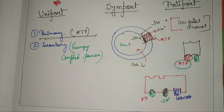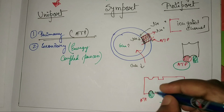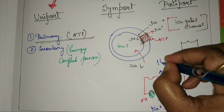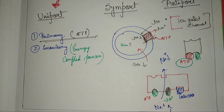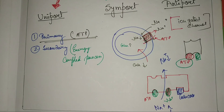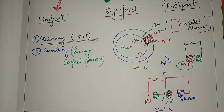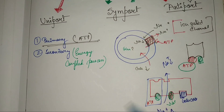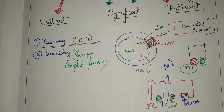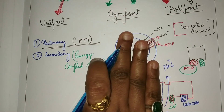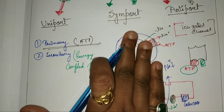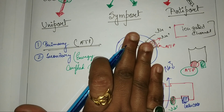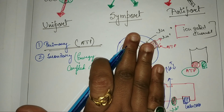When sodium moves from higher concentration to lower concentration — meaning higher outside and lower inside — it produces energy. Even if ATP is not available in this case, secondary transport can still occur. When sodium moves from higher concentration to lower concentration, it produces energy.